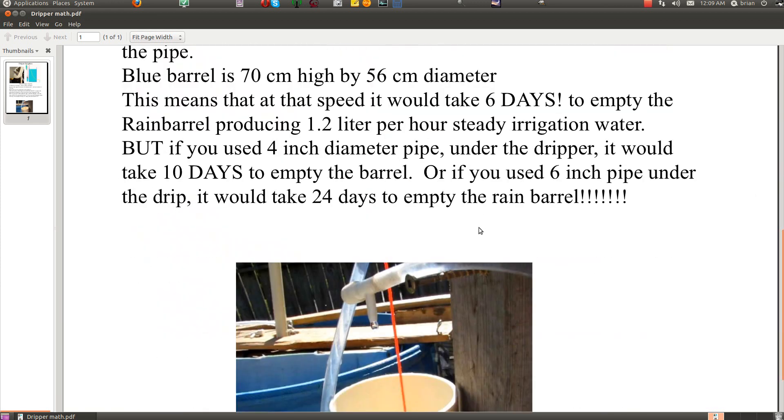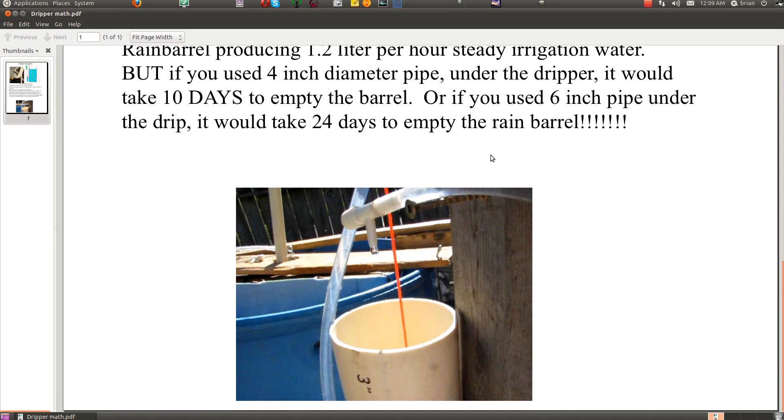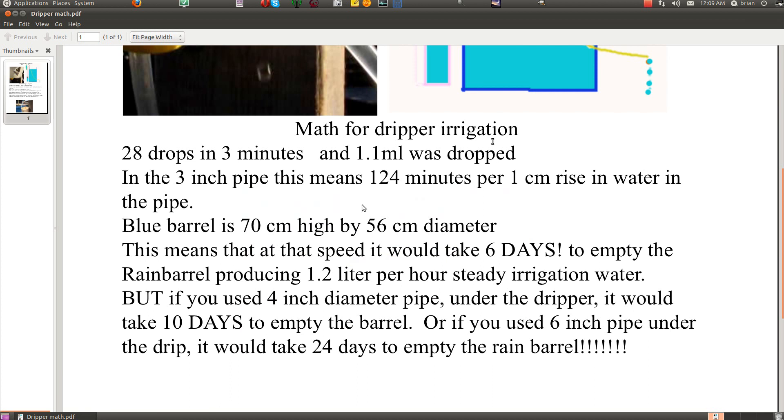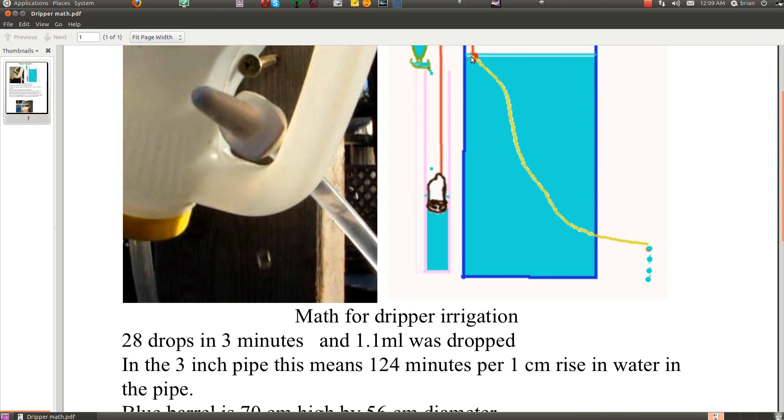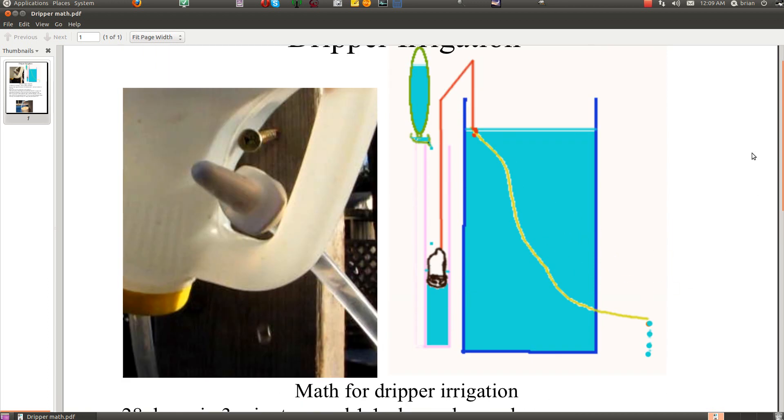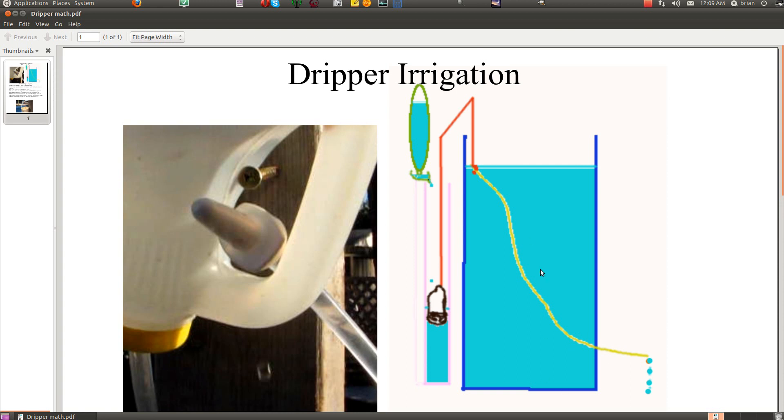So yeah, this could be very interesting for people. You know, even 6 days is a nice achievement for dripping water out of a rain barrel at a constant rate. I don't think there's a simpler method to do it than this.